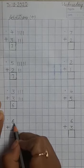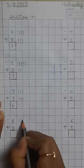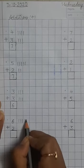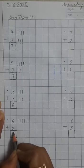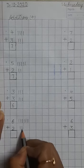Now children here we have 6. We draw here 6 lines. 1, 2, 3, 4, 5, 6. Here we have number 2. We draw here 2 lines. 1, 2.